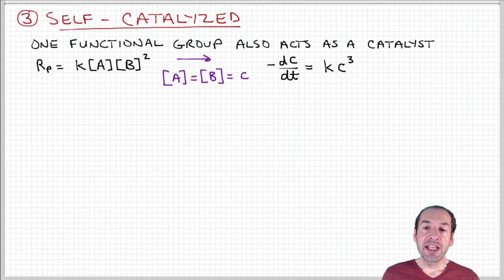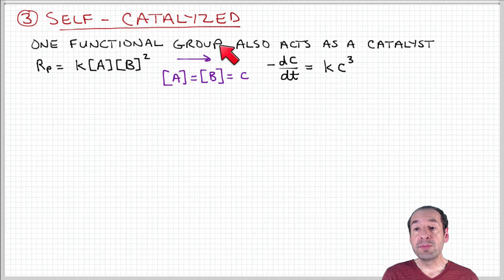And finally, we can consider a self-catalyzed case. For example, one functional group on one of these monomers, A or B, may actually play a role as a catalyst to enable the reaction to progress.